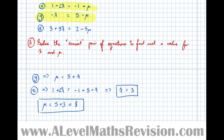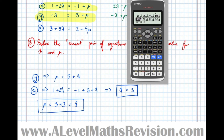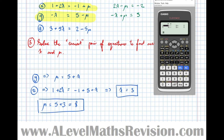An alternative approach is to rearrange both equations so all letters are on the left and numbers on the right: 2λ - μ = -2 and -λ + μ = 5. Entering these into the calculator's simultaneous equation solver with two unknowns gives λ = 3 and μ = 8, confirming our values.